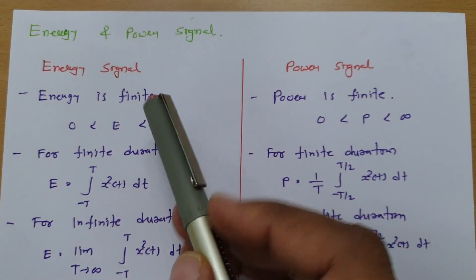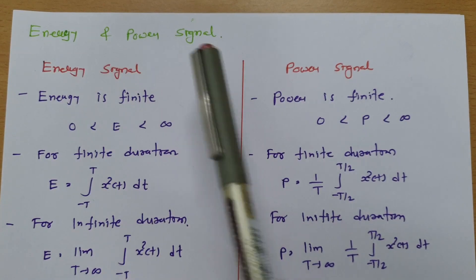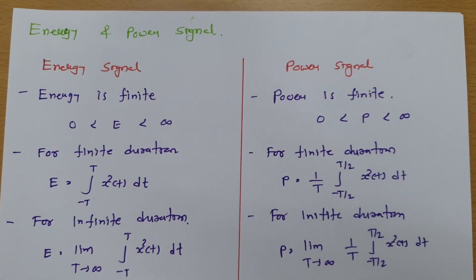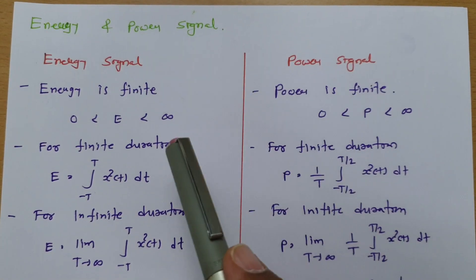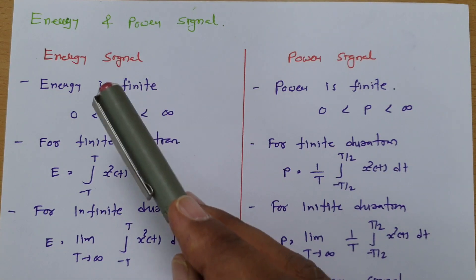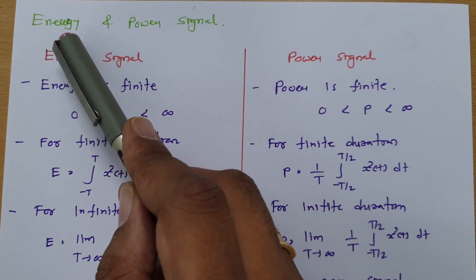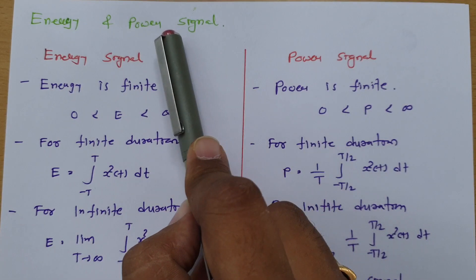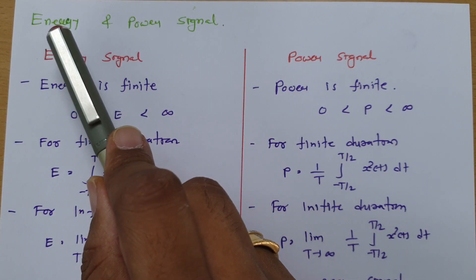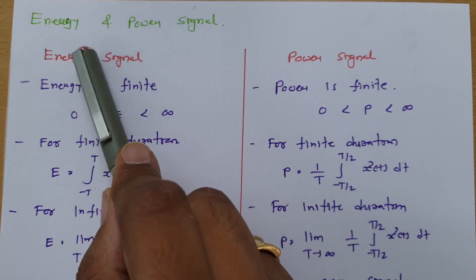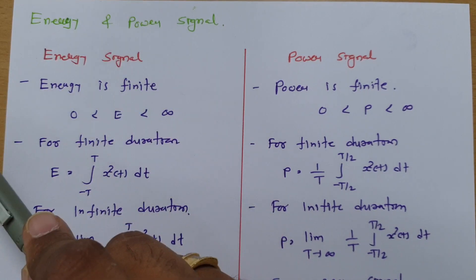Welcome to the signal and system lecture series. In this session, I will discuss energy and power signals. Before explaining what an energy signal and power signal are, we should understand that if a given signal is an energy signal, it cannot be a power signal. And if a given signal is a power signal, it cannot be an energy signal. But it is possible that a given signal may not be an energy or power signal.